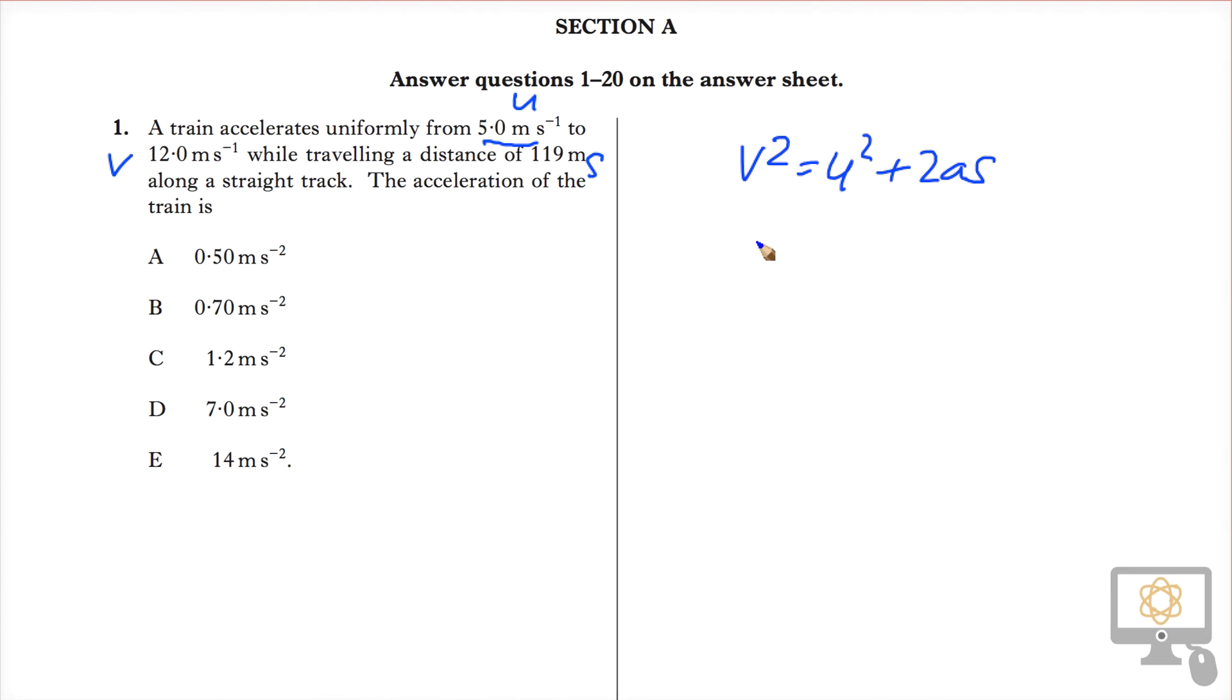Substituting in, it's 12 squared equals 5 squared plus 2 times the acceleration, which is a, times the displacement, which is 119 meters.